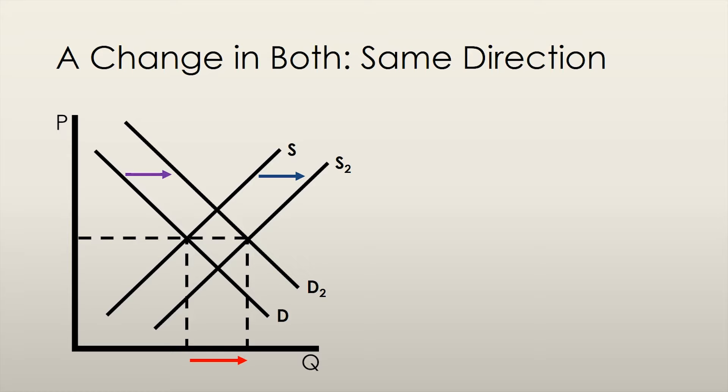You might be wondering, what if the curves don't shift by the same amount? Well, if the supply curve shifts to the right more than the demand curve shifts to the right, then we can say that the equilibrium price has decreased. Conversely, if demand increases more than supply increases, we would observe an increase in the equilibrium price. If both supply and demand increase by the same amount, then the equilibrium price would remain unchanged.